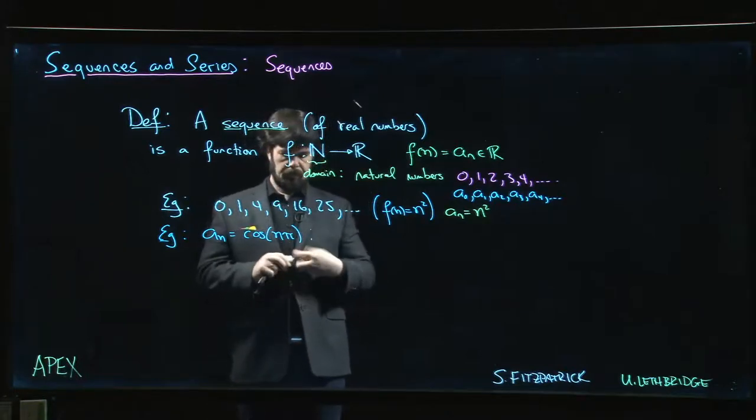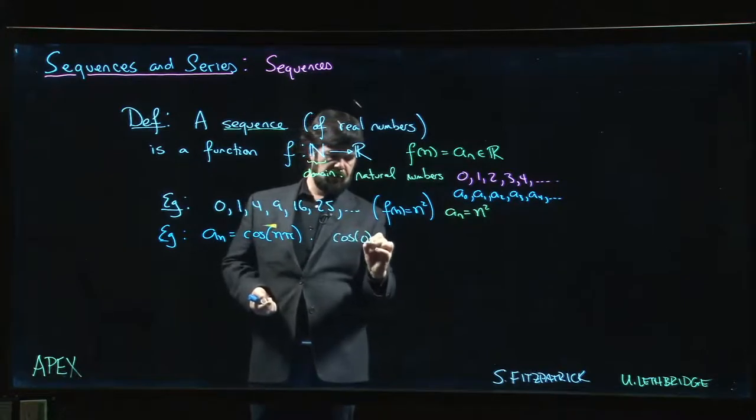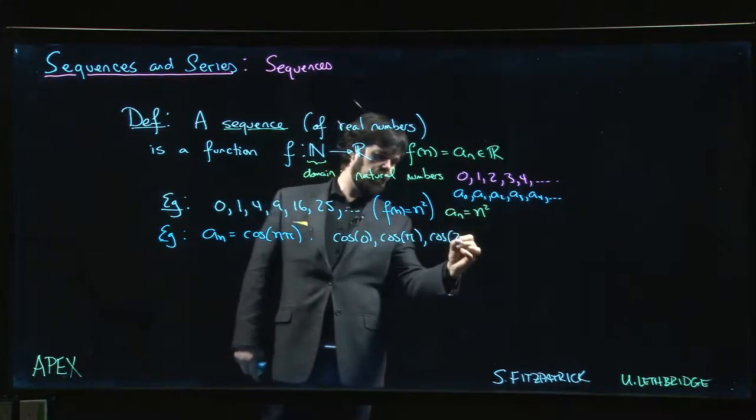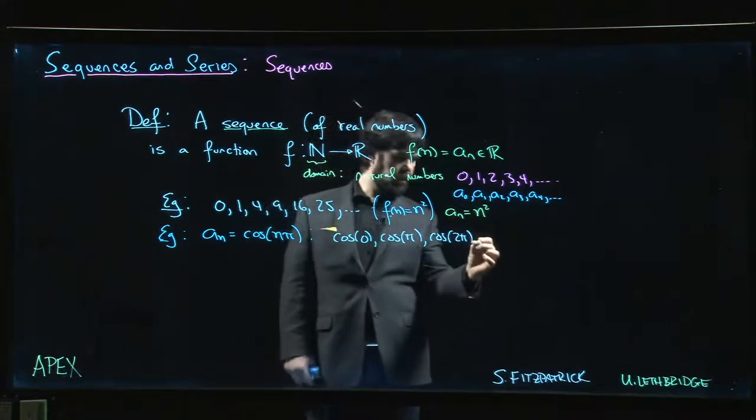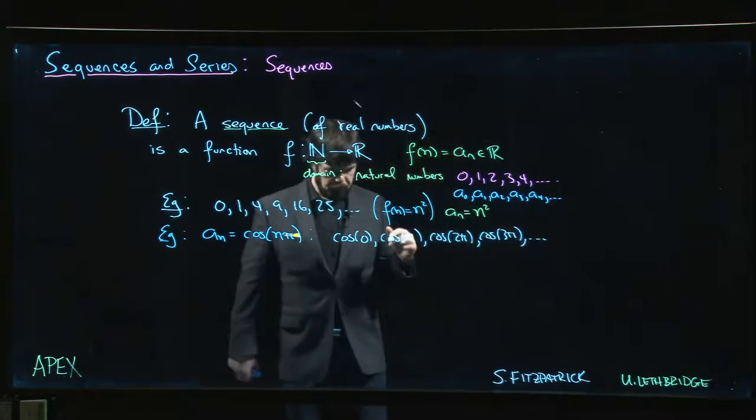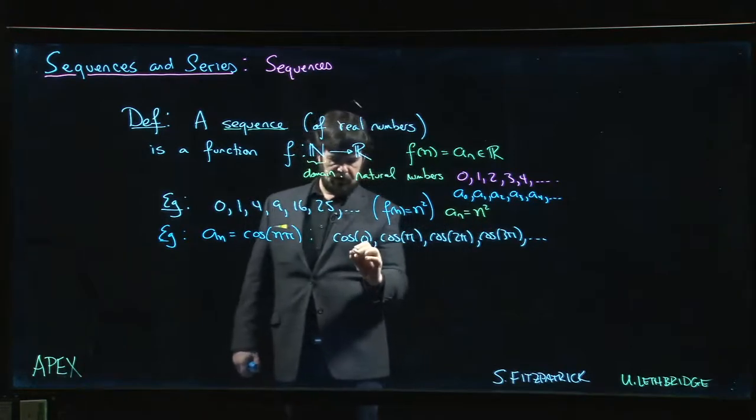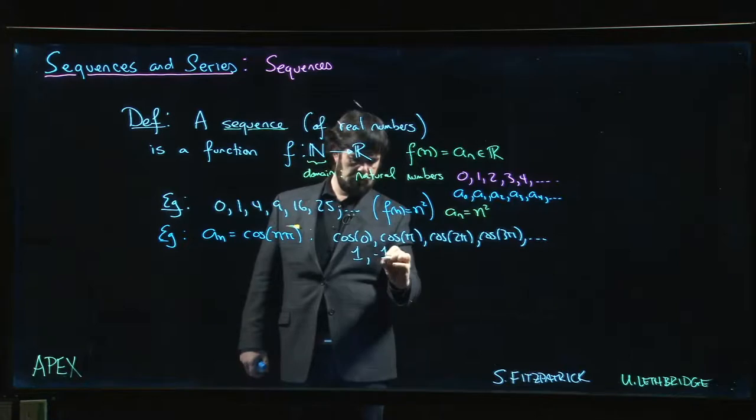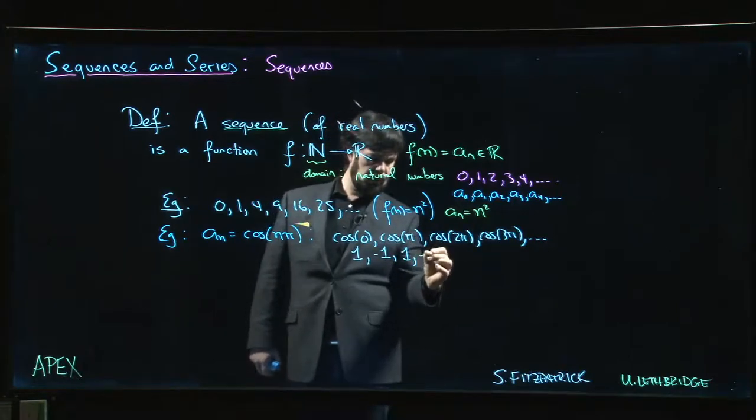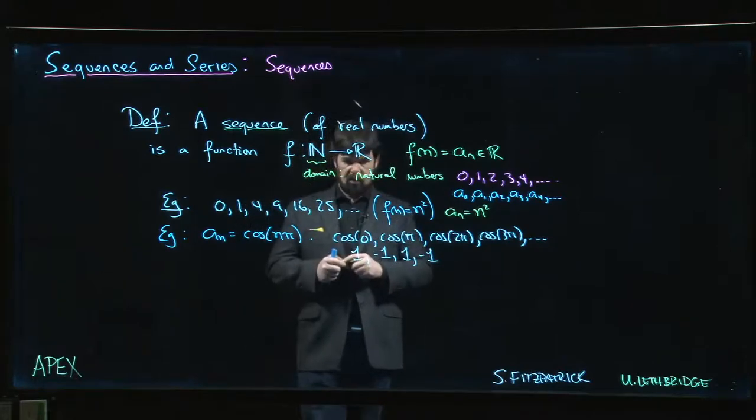Well, it gives me cosine of 0, cosine of pi, cosine of 2 pi, cosine of 3 pi, and so on. But we know the value of cosine at multiples of pi. Cosine of 0 is 1, cosine of pi is minus 1, cosine of 2 pi is 1 again, cosine of 3 pi is minus 1. So you get a sequence that just alternates back and forth, 1 minus 1, 1 minus 1.